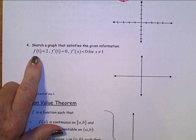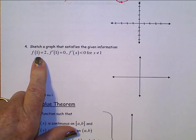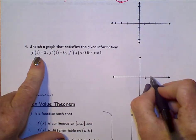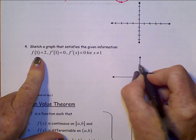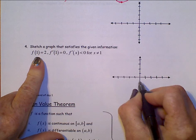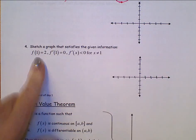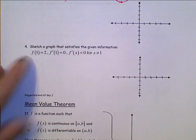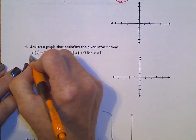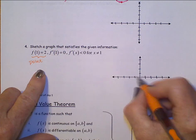All right, look at this next one. Let's sketch a graph that satisfies this information. So, one, two, three, four. All right, f of one is equal to two. That is a point. f of one is equal to two.